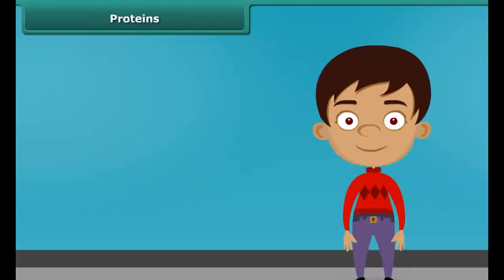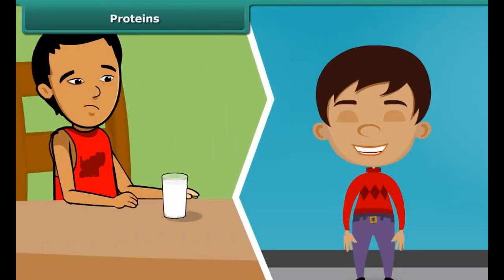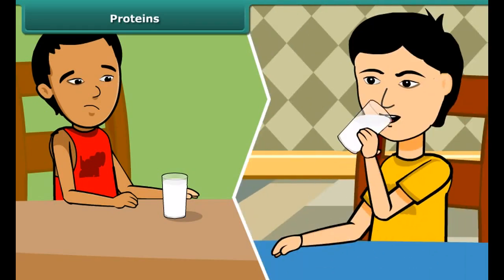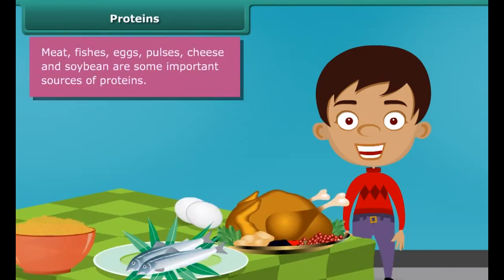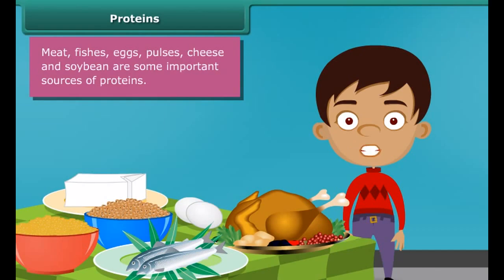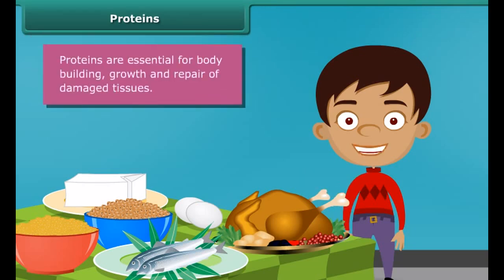You might have noticed that some children who do not drink milk become weak and are underdeveloped, because milk contains required proteins for our growth. Meat, fish, eggs, pulses, cheese and soybean are some other important sources of proteins in our diet. The major role of proteins is building and repairing of damaged tissues.